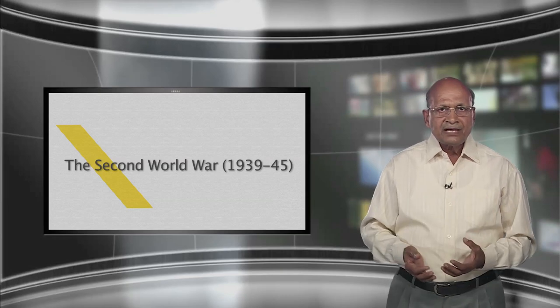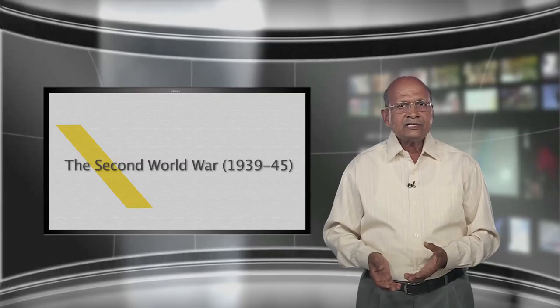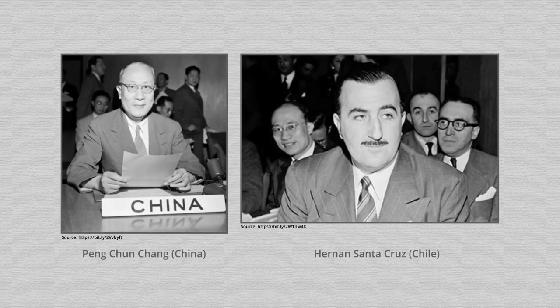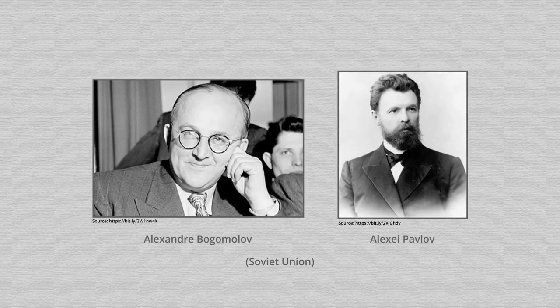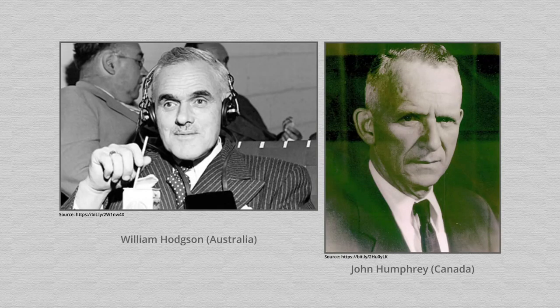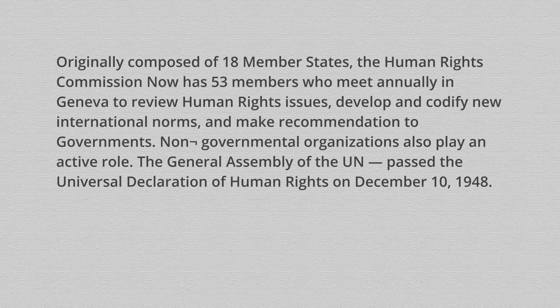Under the chairmanship of Eleanor Roosevelt, human rights activist and widow of former US President Franklin Roosevelt, the commission took up the job of defining basic rights and freedoms. Key contributors included René Cassin from France, Charles Malik from Lebanon, Peng Chung Chang from China, Hernán Santa Cruz from Chile, Alexander Bogomolov and Alexei Pavlov from the Soviet Union, Lord Dukeston and Geoffrey Wilson from the United Kingdom, William Hodgson from Australia, and John Humphrey from Canada. Originally composed of 18 member states, the Human Rights Commission now has 53 members who meet annually in Geneva to review human rights issues, develop and codify new international norms, and make recommendations to governments.